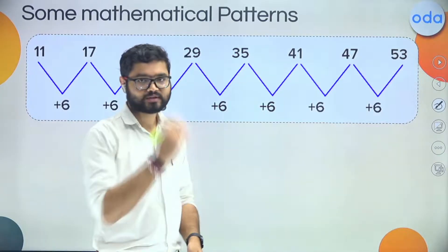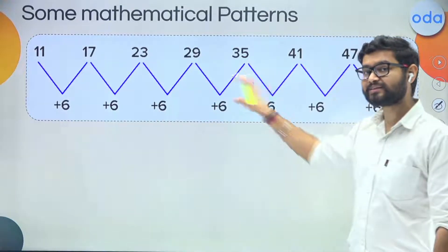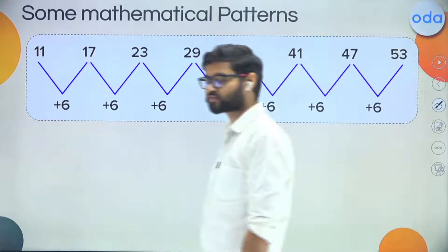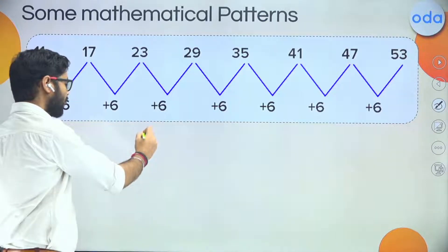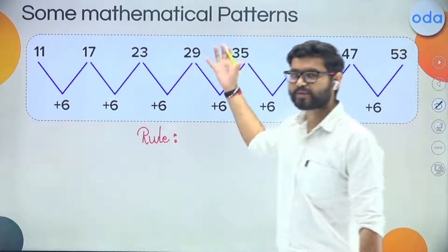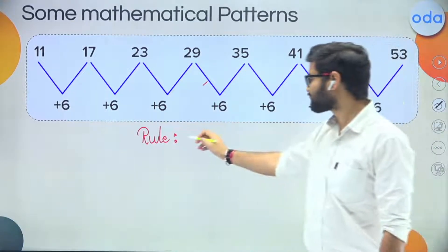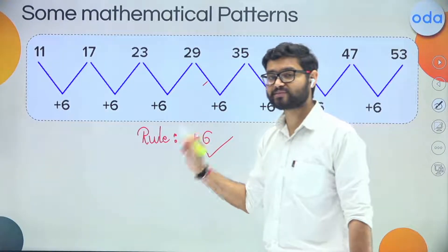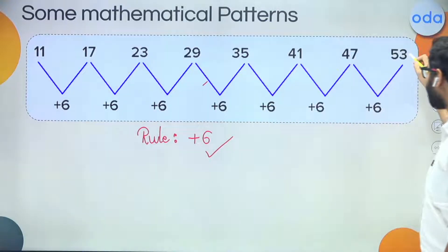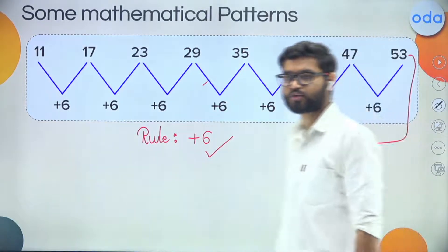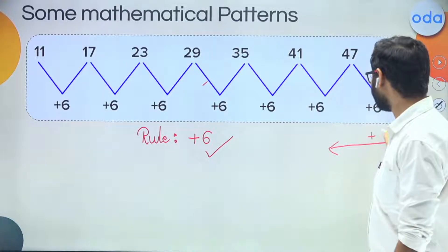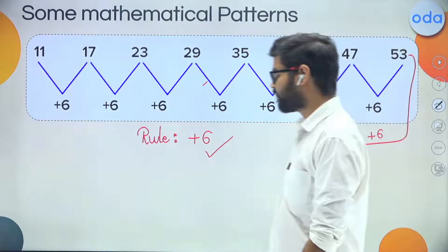Let's take one more example. Here we have a few more numbers and this time we are adding number 6 all the time. What is the rule in this pattern? If you are saying the rule is plus 6, you are absolutely right — every time we are adding number 6. So what will come after 53? The rule is plus 6, so 53 plus 6 will become 59.